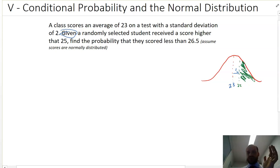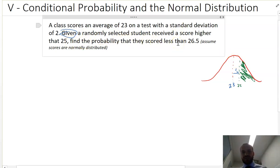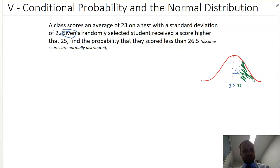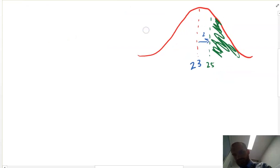Alright, so we can say with certainty that the student scored more than 25. Now we need to find the probability that they scored less than 26.5. Let's draw 26.5 in there, in black. Okay, here's 26.5. And we want to know the probability that they scored less than 26.5.